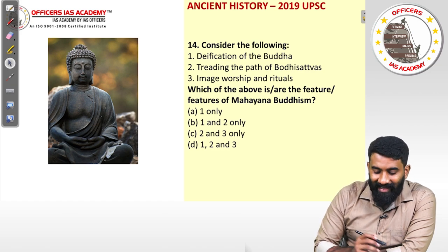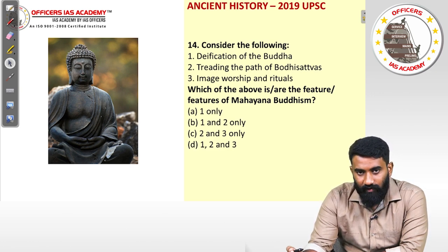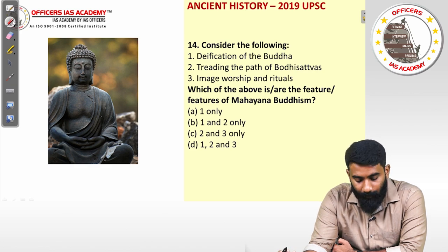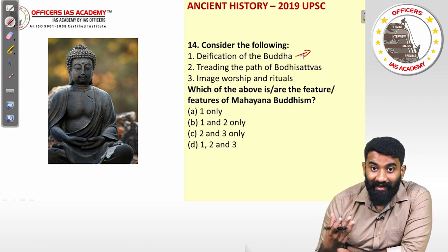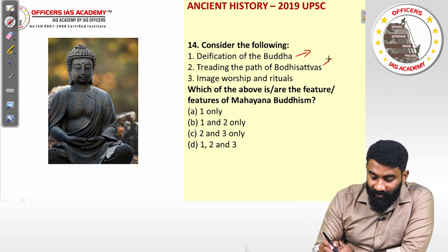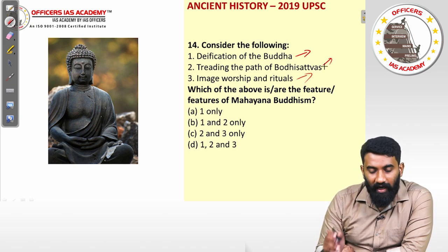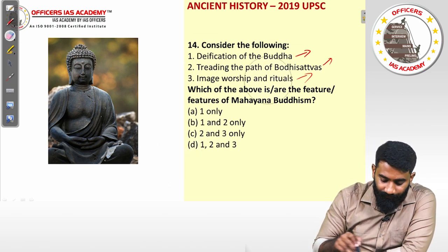Question fourteen: deification of the Buddha, treading the path of Bodhisattvas, and image worship and rituals — which of these are features of Mahayana Buddhism? Deification of the Buddha means treating Buddha himself as a deity or god. Treading the path of Bodhisattva and image worship and rituals are all core features of Mahayana Buddhism. All three statements are correct. The answer is option D: 1, 2 and 3.